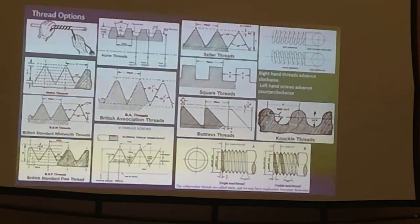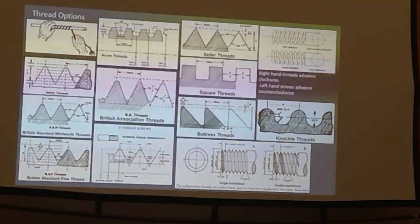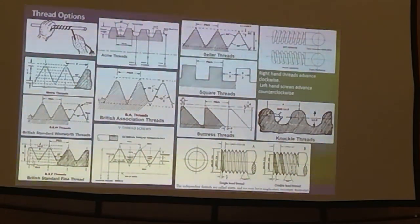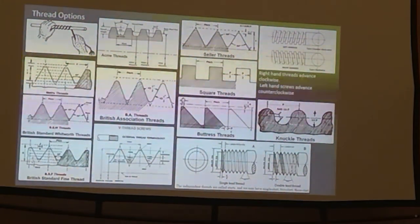And there's as many thread options as you could imagine. Square threads, cellar threads, buttress threads, knuckle thread. I don't know what I've ever seen that on. But there's also a British standard of screws that are a little bit different than metric or the United States version of screws. So they've come out with their own BA thread which is the British Association threads.